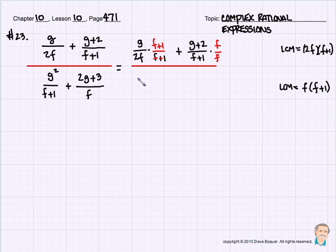And in the denominator, I have, so let's go with g times, I'm going to multiply that g squared over f plus 1 times f over f. And then that 2g plus 3 over f times f plus 1 over f plus 1.